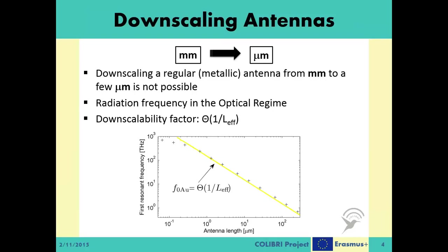Downscaling a classical metallic antenna from millimeters to a few micrometers is not possible. As the radiation frequency increases, the electromagnetic waves they generate enter the optical regime, where they are governed by optical physics. As you see in this figure, the radiation frequency increases proportionally with the reduced size of the antenna.